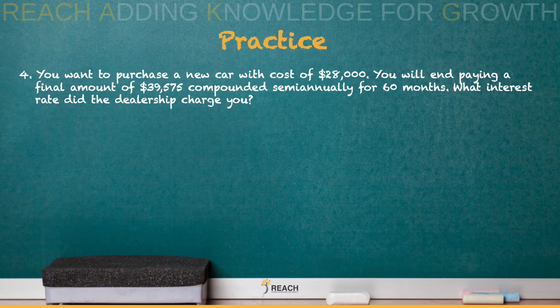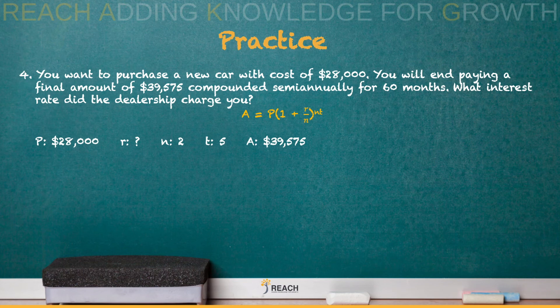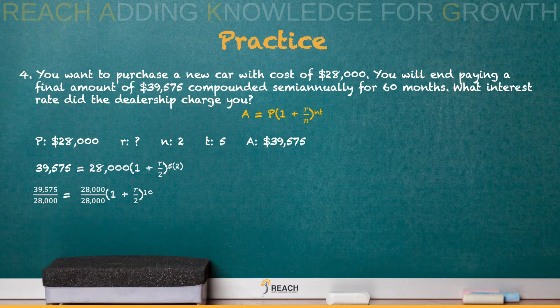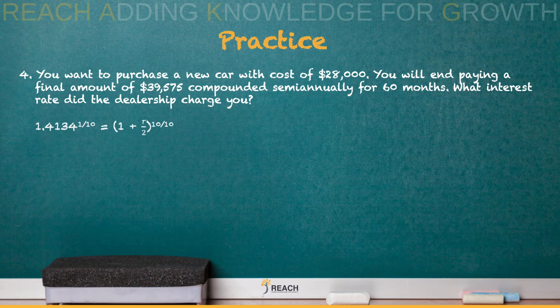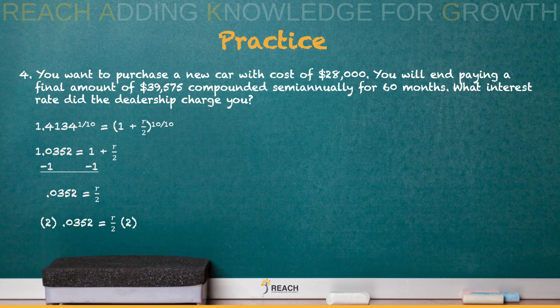Number 4: which formula do you need? Compounded for a specific time because it says semi-annually, so N equals 2. Label the variables and we're solving for our rate. Plug in and divide both sides by 28,000, giving us 1.4134 equals the quantity in parentheses to the 10th power. To get rid of the exponent, raise both sides to the 1/10 power and get 1.0352. Subtract 1 on both sides, then multiply by 2, and R is about 0.0704, which is 7.04%.